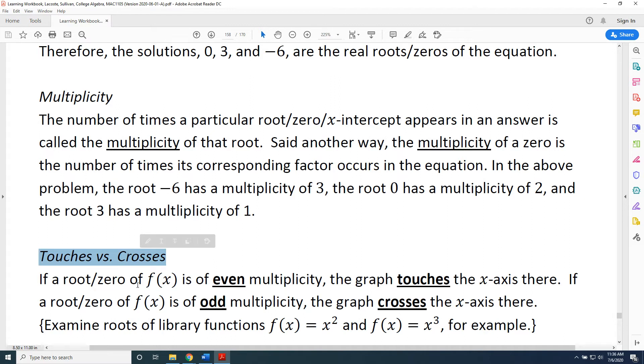If a root or zero of a function is of even multiplicity, then the graph touches the x-axis there. If a root or zero of f(x) is of odd multiplicity, then the graph crosses the x-axis there.